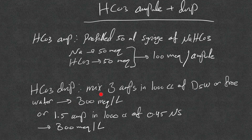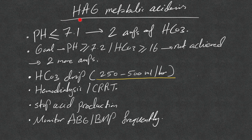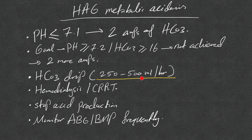In severe metabolic acidosis, mix bicarb with free water or D5W. In high anion gap metabolic acidosis when pH is ≤7.1, push two amps of bicarb with the goal of achieving pH ≥7.2 and/or bicarb ≥16. If not achieved, push two more amps. If still not achieved, use a bicarb drip. A common mistake is running the drip too slowly — use 250 to 500, sometimes 1000 cc/hour in severe life-threatening acidosis.